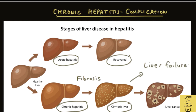Cirrhosis is permanent and cannot be reversed. Patients with cirrhosis have a higher chance of developing liver cancer. Hence, it is important to detect chronic hepatitis at an early stage and treat it. There are many effective medicines to treat the various types of hepatitis and prevent progression to scarring, fibrosis, cirrhosis, liver failure, and cancer. Unfortunately, most people with chronic liver disease do not have symptoms until complications like liver failure and cancer develop.